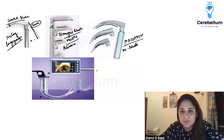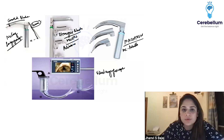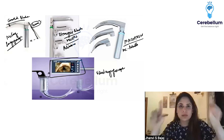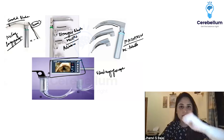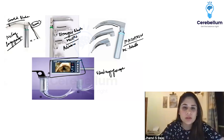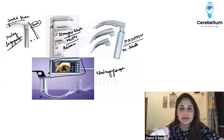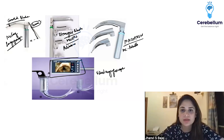This is called a video laryngoscope. You can see there is a big camera on it. Through the camera you can actually see the vocal cords and intubate. This is the video laryngoscope.